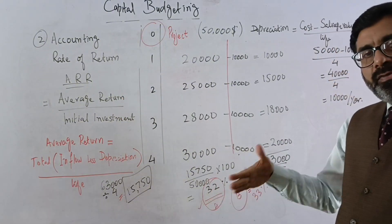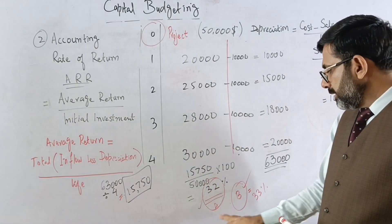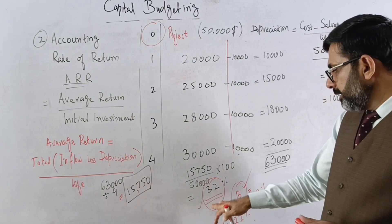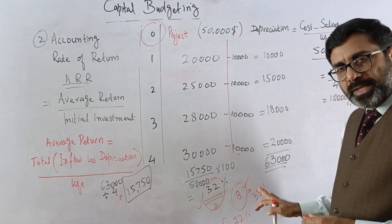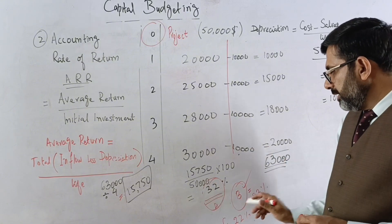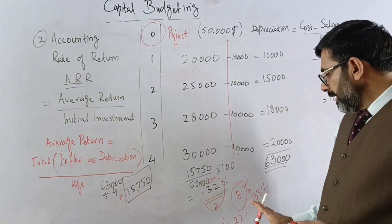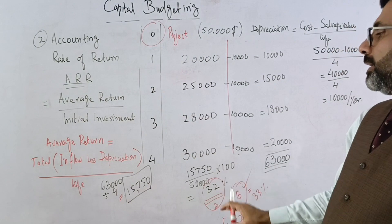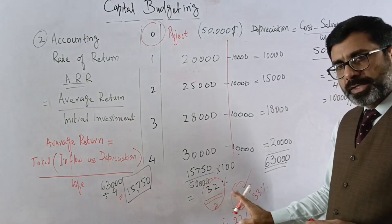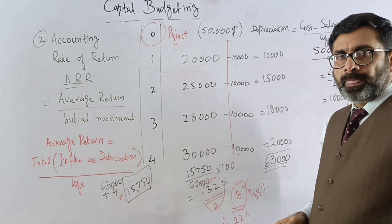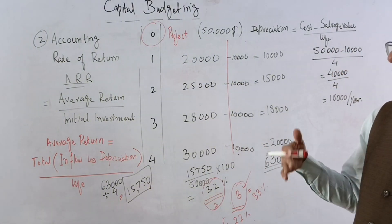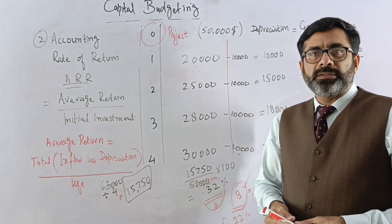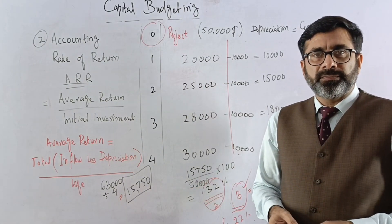We get approximately 32% and compare it with other projects: if Project C gives 22%, Project A gives 32%, and Project B gives 33%, then obviously the maximum return is 33%. According to the Accounting Rate of Return, Project B with 33% is the best option. I hope you understood the concept — if you have any confusion or doubts, you can ask in the comments section. Thank you.